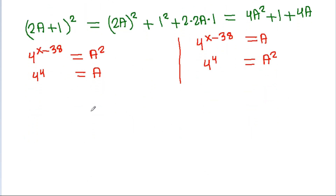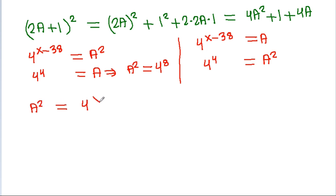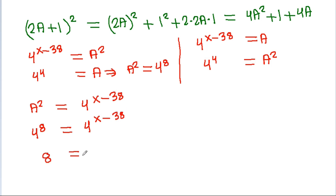And from here, a squared can be equal to 4 power 8. And we have a squared is equal to 4 power x minus 38, and a squared is 4 power 8, so it can be equal to 4 power x minus 38. So 8 will be equal to x minus 38.